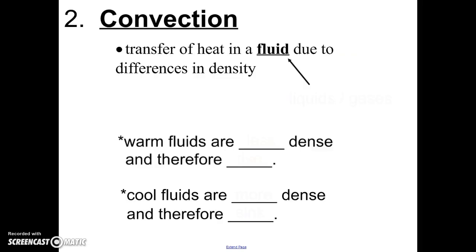The next type of energy transfer is called convection. Convection is how heat transfers in a fluid. In real life, when we think of fluids, we think of liquids, but in terms of science, a fluid is considered anything where the molecules flow. So liquids and gases are both considered fluids. When heat transfers through a liquid or gas, it happens because of differences in density. We already know that when you heat up something, it becomes less dense, and when things are less dense, they rise. On the flip side, when things are cooler, they become more dense, and therefore they sink. Convection happens in liquids and gases.